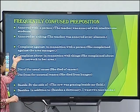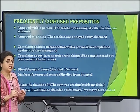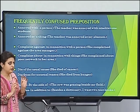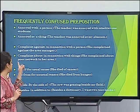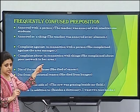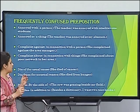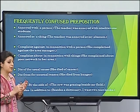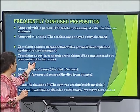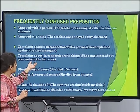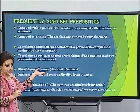Similar is the case with 'complain against' and 'complain about.' When we complain with reference to a person, we use 'complain against.' And when we complain about something or some matter, we use 'about.' For example, she complained about poor network in her area.